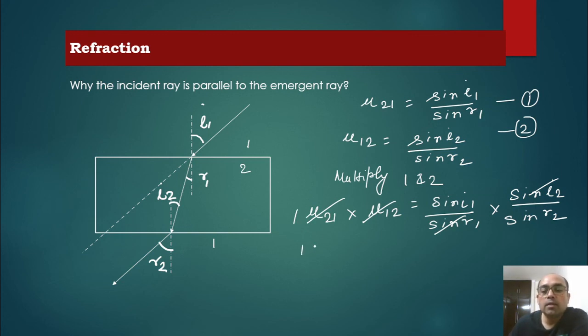So 1 is equal to sine i1 divided by sine r2. So we get sine r2 equal to sine i1.